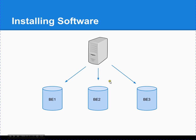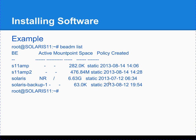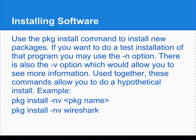Solaris 11 uses something called boot environments. A boot environment is an instance of an operating system, allowing you to boot into multiple versions. This is useful if you want to test the installation of a particular package. To find out how many boot environments you have, you type beadm list. Here's a result showing four different instances of a boot environment on our system. When you boot your machine, you would see all these boot environments as options.